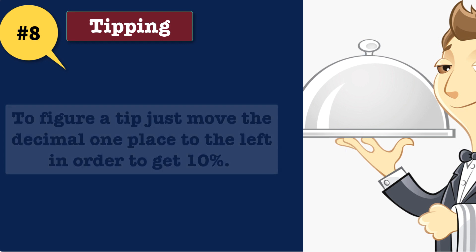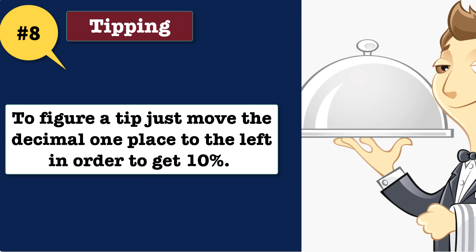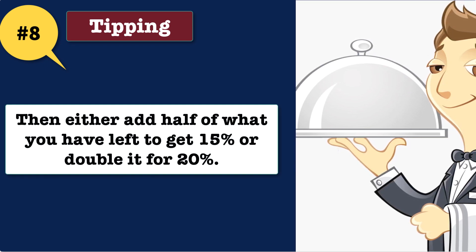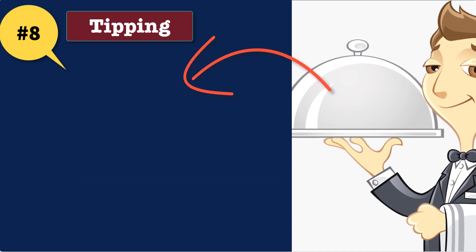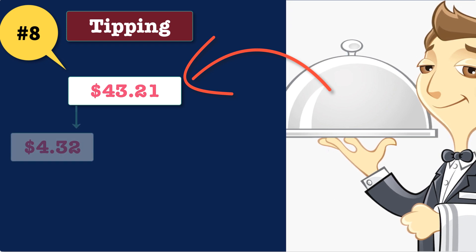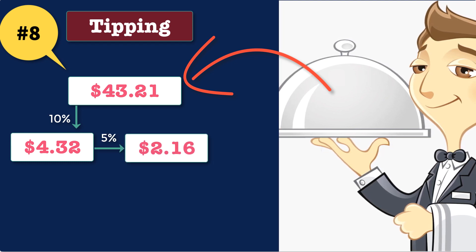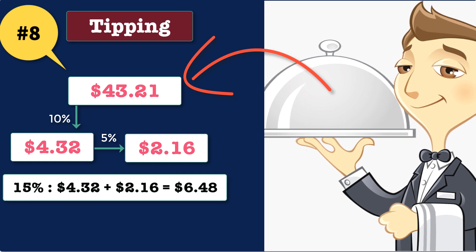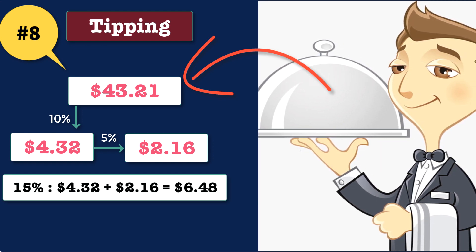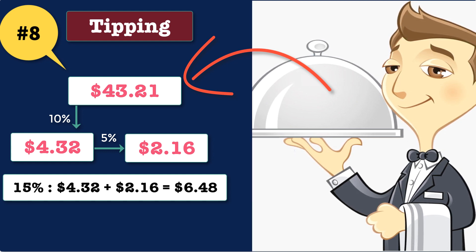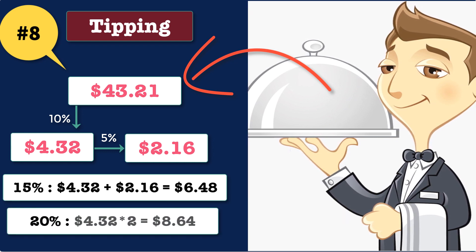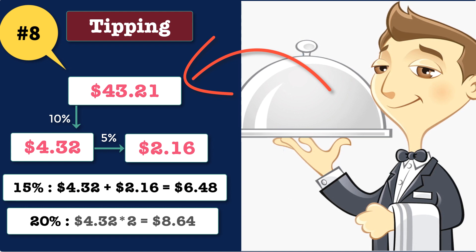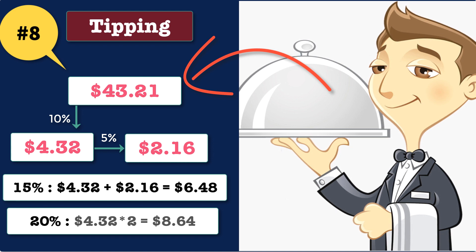Trick 8: tipping. To figure a tip, just move the decimal one place to the left in order to get 10 percent. Then either add half of what you have left to get 15 or double it for 20 percent. For example, if the bill is $43.21, then $4.32 is 10 percent. Half of $4.32 is $2.16, so if you want 15 percent just add that on. It would give you $4.32 plus $2.16 which equals $6.48. Getting 20 percent is even easier because you just double it. $4.32 times 2 equals $8.64. So if you are feeling generous, then $8.64 would constitute a 20 percent tip.